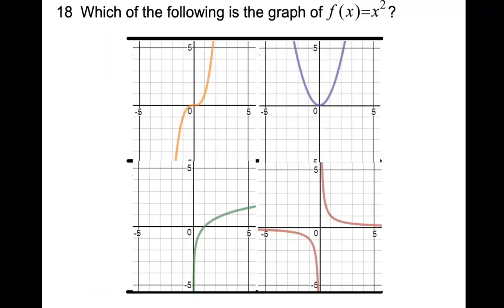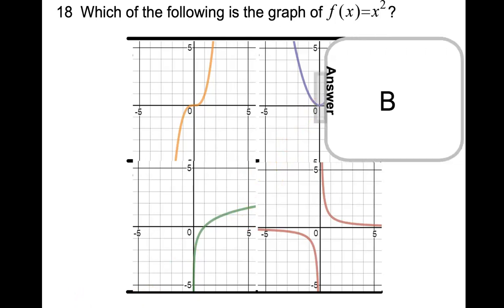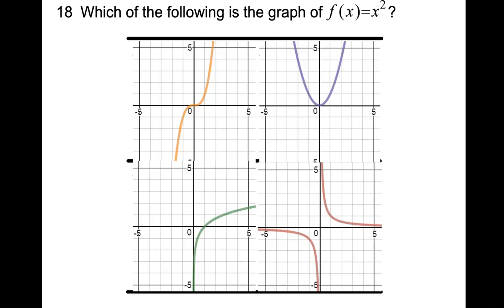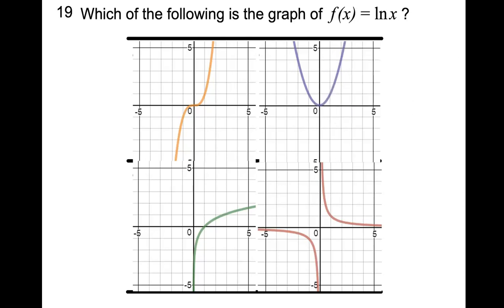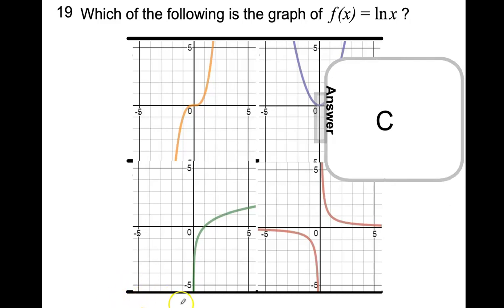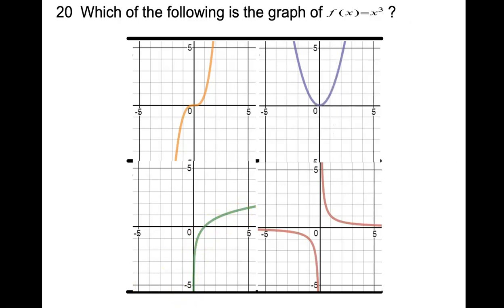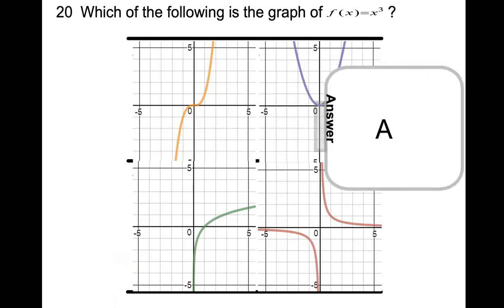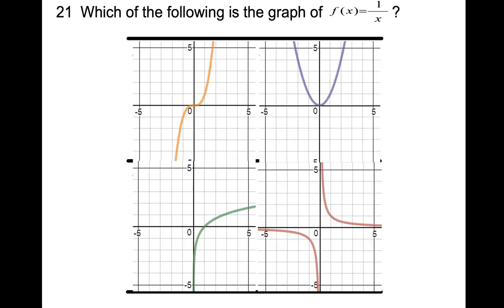Which of the following is the graph of f of x equals x squared? Since it is a quadratic function, option B is the correct answer. For the graph of the natural log of x, option C is the correct answer — use a graphing calculator to verify. For f of x equals x cubed, a cubic polynomial, option A is correct. For f of x equals 1 over x, option D is the correct answer.